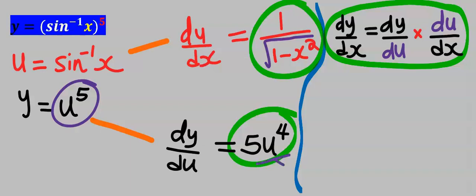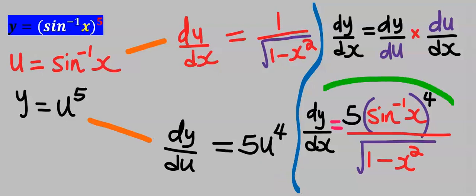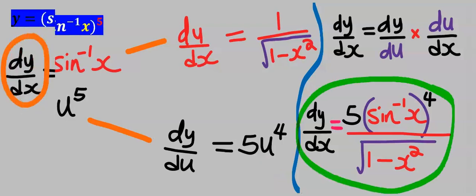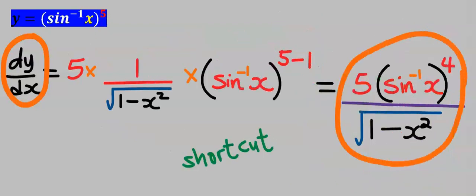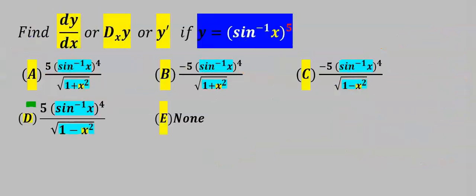Replace the value of u which is sine inverse of x. Multiplying our result and replacing the value of u, this is our dy/dx — which is the same answer as obtained earlier using the shortcut method. From the options our answer is D.